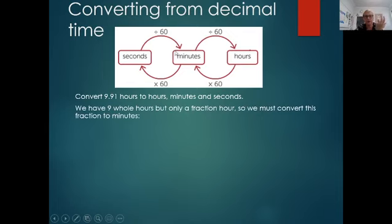So the last time, we were dividing by 60. Remember, it was over 60. So now we times by 60. So we do that. 0.91 times by 60, and we get 54.6 minutes.